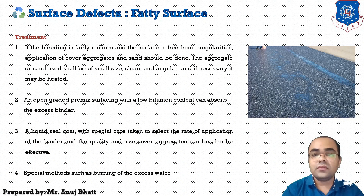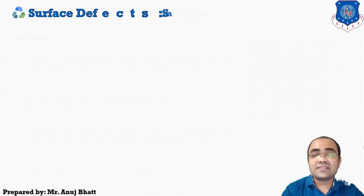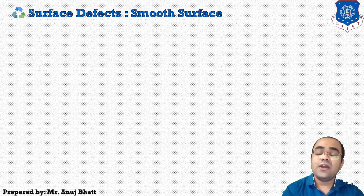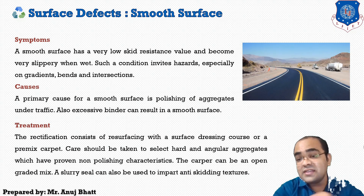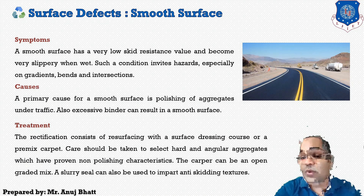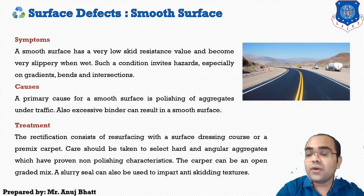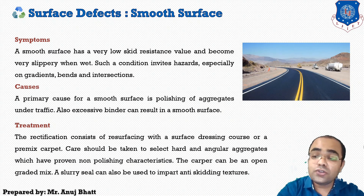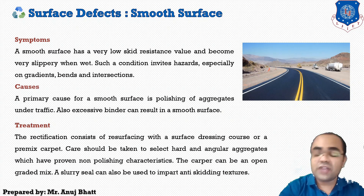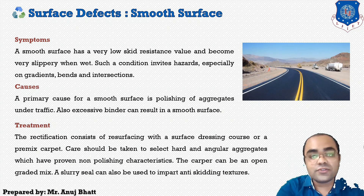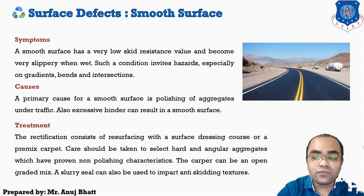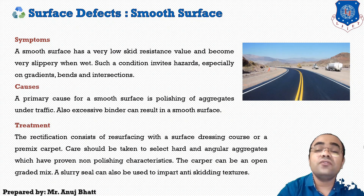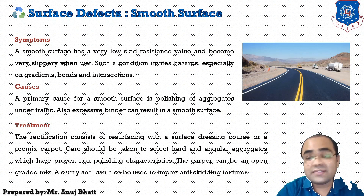After the fatty surface, the next surface defect is the smooth surface. As you can see in the figure, this particular surface appears very smooth over the pavement. Sometimes such a smooth surface may cause accidents, so we need to give some skid-resistant property to such pavement surfaces. The symptom is that a smooth surface has a very low skid resistance value.